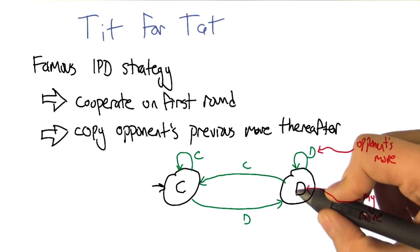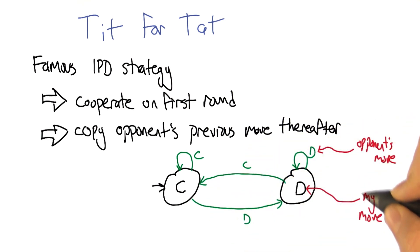In this picture, the black letters here represent my move, and the green letters represent my observation of the opponent's move, or at least if I'm being tit for tat.